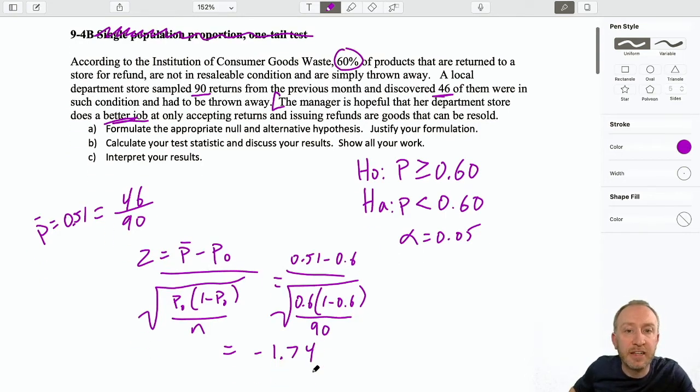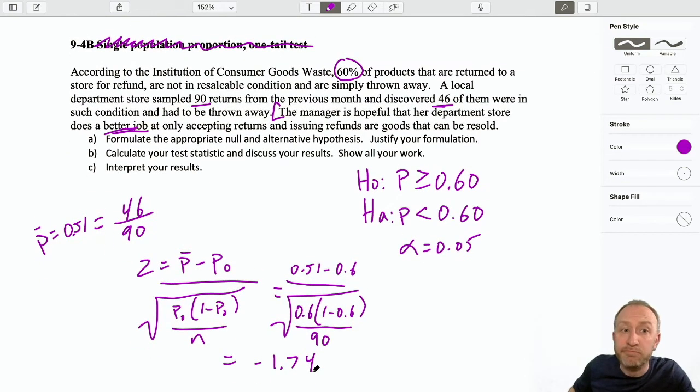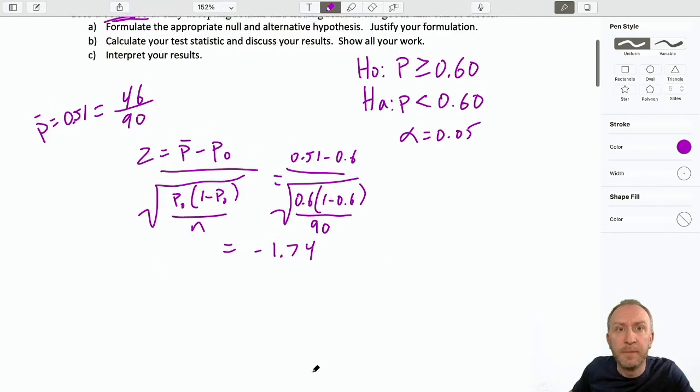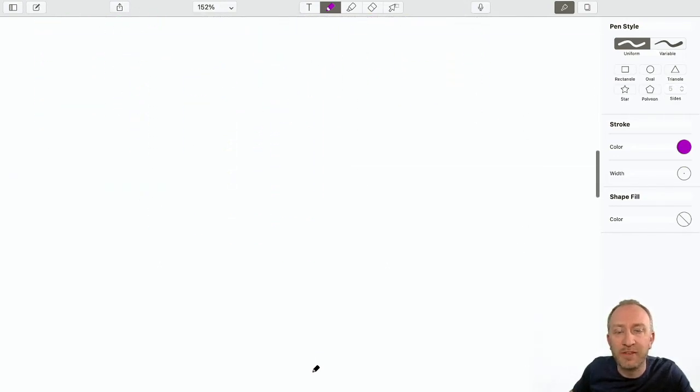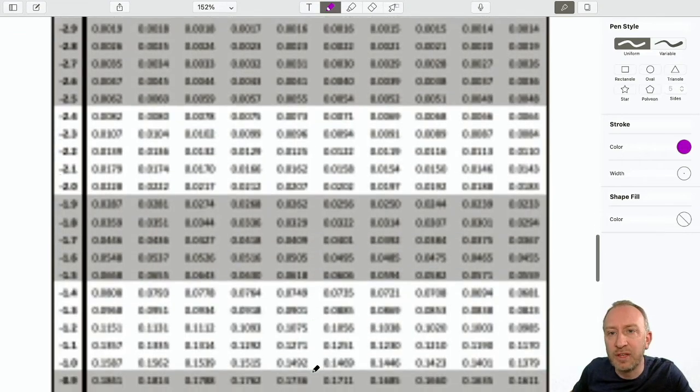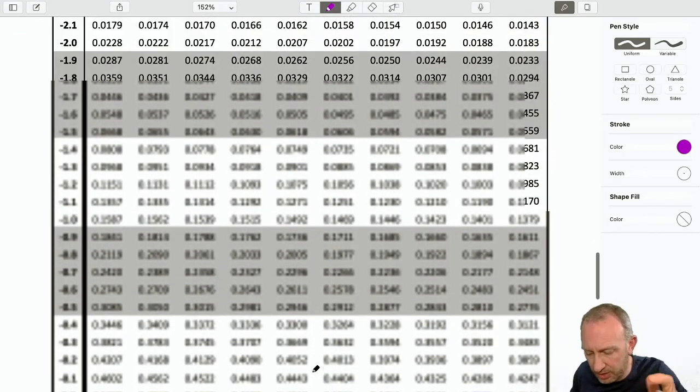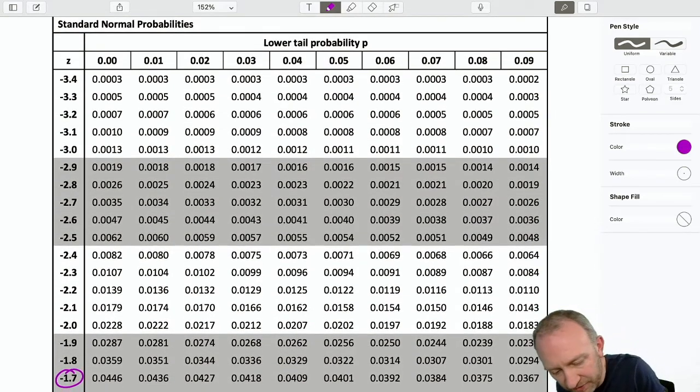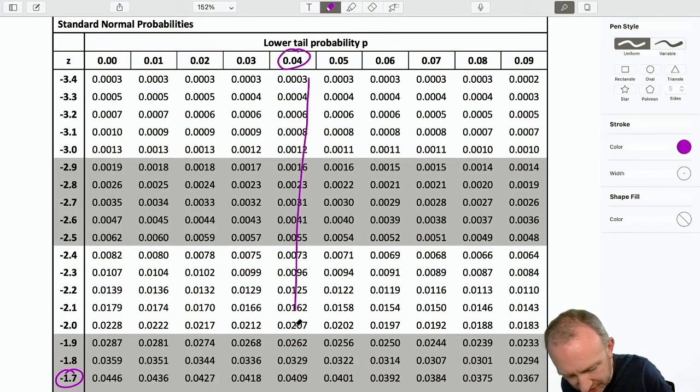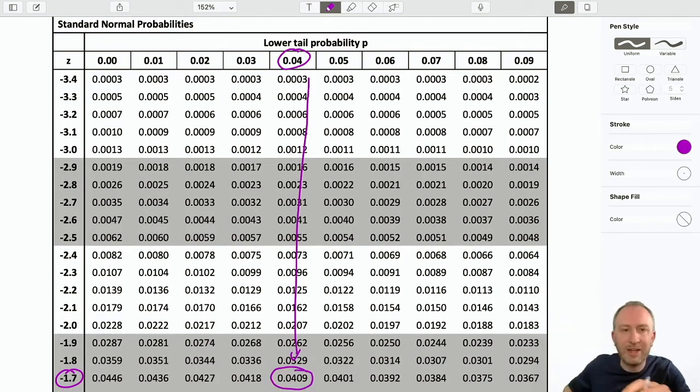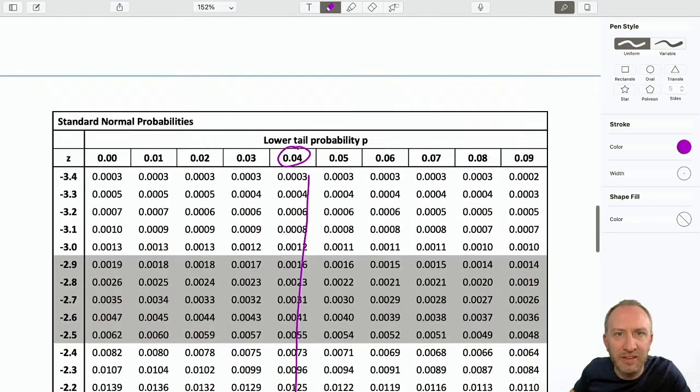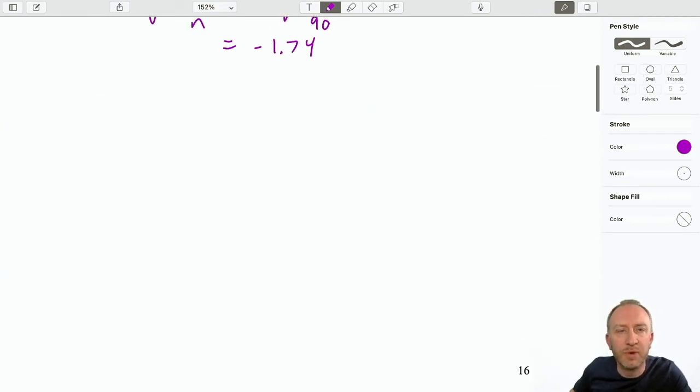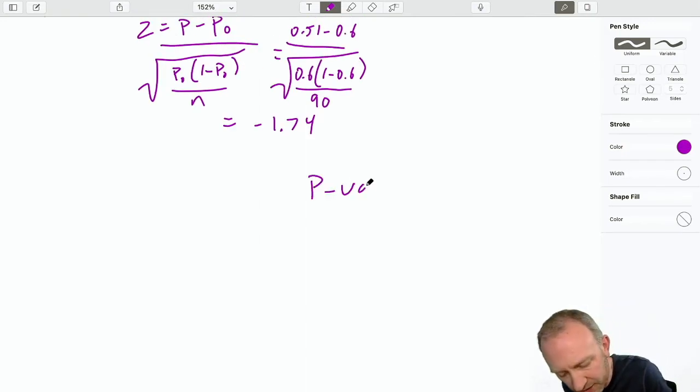Okay, so there's our test statistic. Same as always. P-value approach, critical value approach. Let's go to our z tables. My test statistic is negative 1.74. I can come down here, negative 1.7, and here's my 4, 0.04. That gives me a value of 0.04. We'll just keep it to two decimal places.